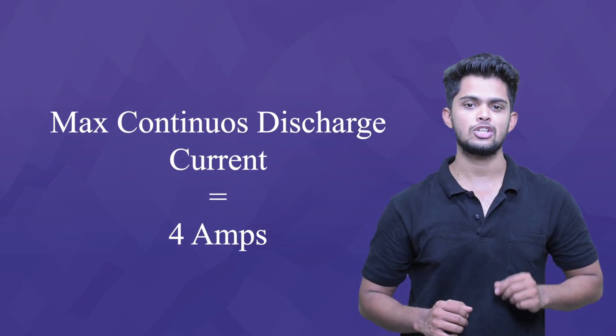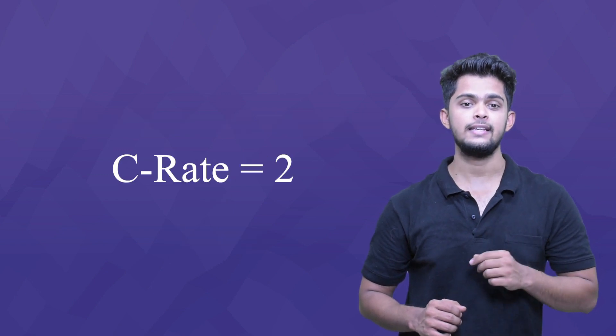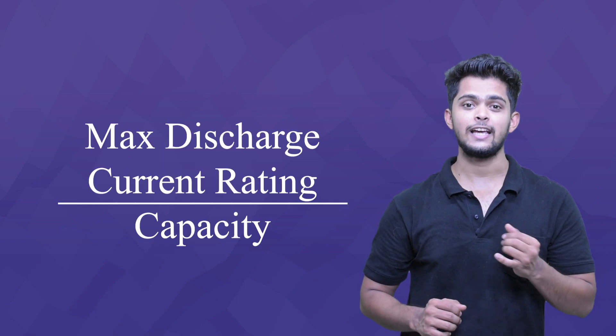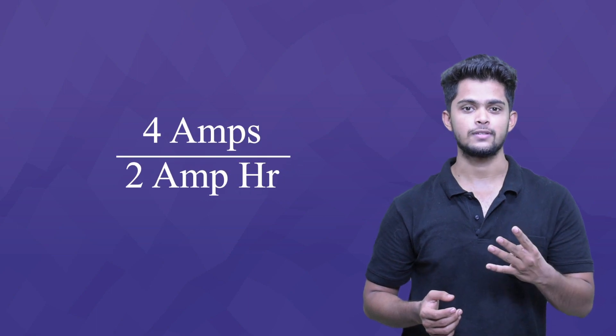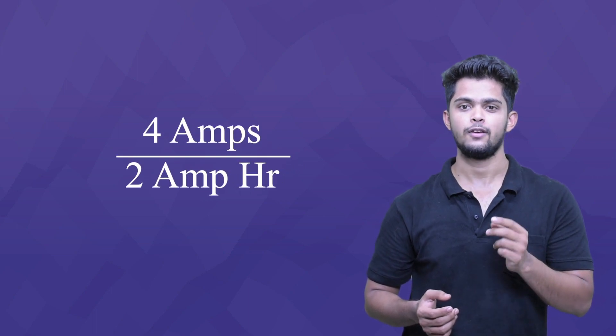C-Rate is calculated as a multiple of the capacity rating of the battery. For example, a battery cell with a rated capacity of 2 Amp-hours and a maximum continuous discharge current of 4 Amps has a C-Rate of 2 — this battery would be known as a 2C battery. We get C-Rate by dividing the maximum discharge current by the capacity: 4 Amps divided by 2 Amp-hours gives us 2.